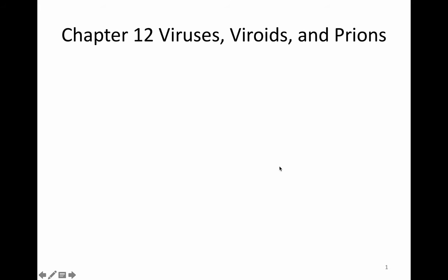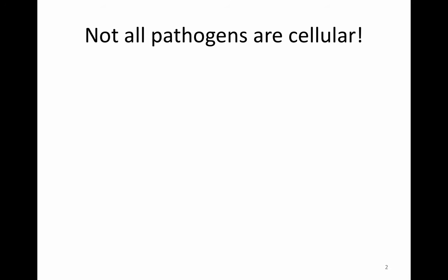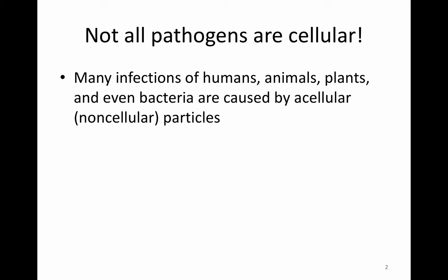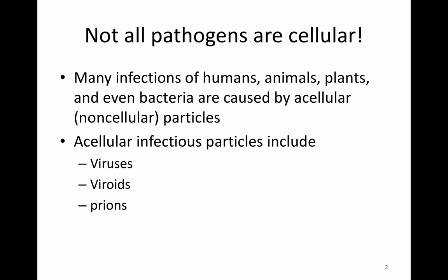This is the Chapter 12 video. We're going to cover viruses, viroids, and prions. These are acellular infectious particles. Many infections of humans, animals, plants, and even bacteria are caused by acellular non-cellular particles such as viruses, viroids, and prions.